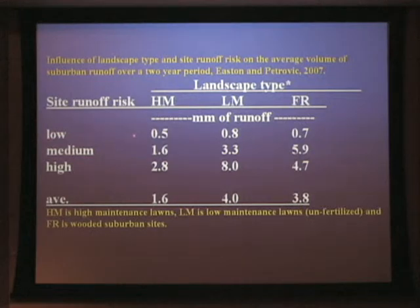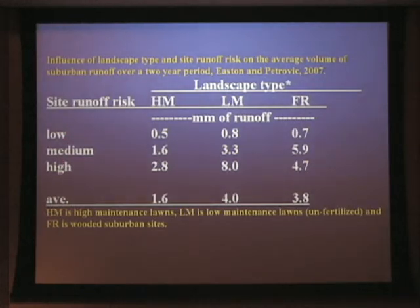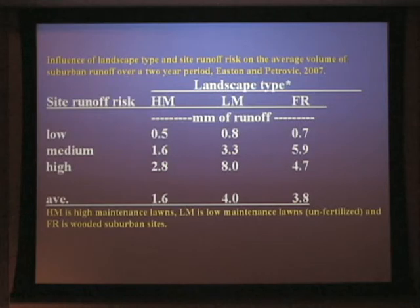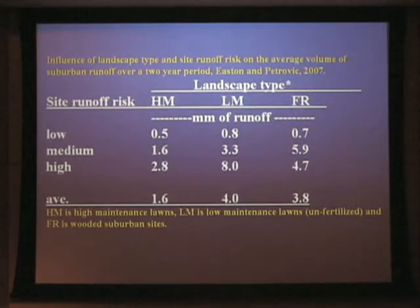And it depended on where in this particular watershed, because we had three different areas: a low potential for runoff, a medium and high potential, and you can see there was a difference. However, in each of these situations, the high-maintenance lawn had the least amount of runoff. You have a denser turf, you have more active root system, you probably have more macropore flow due to earthworm activity, and as we moved away from that, we saw substantially greater amounts of runoff, and that will relate to water quality issues in a second.